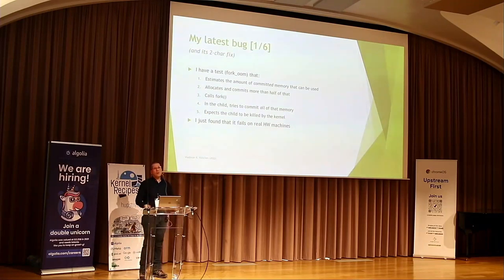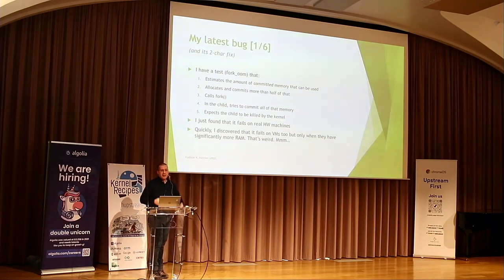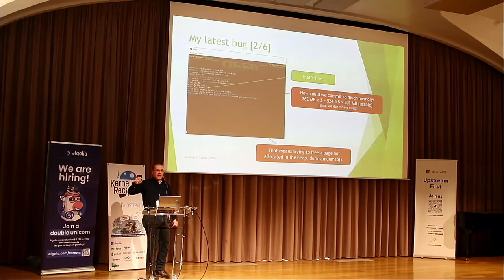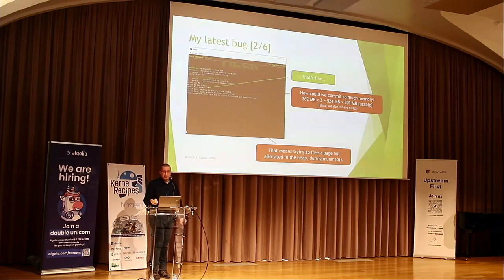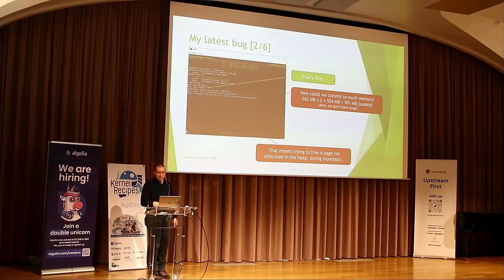I found that it fails on real hardware machines — and also on VMs if you give them more memory. VMs just use less memory by default. So I had to debug it a few days before the conference. The screenshot shows it doing fine: it allocates 262 megabytes while 501 megabytes is usable. Then the child is able to commit all of that — more than all the usable memory. This is incredible, it shouldn't be possible without swap. And then it fails with a kernel panic, because we're trying to free an object that hasn't been allocated on the heap.